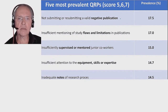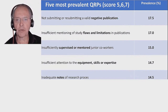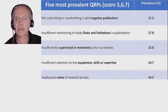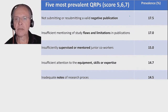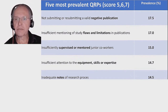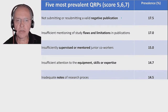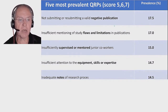We asked our participants about questionable research practices on a seven-point scale. The reference was the last three years, and the scale ranged from one — never — up to seven — always. We lumped together scores of five, six, and seven, so that's the upper end of the scale, let's say frequent. Our respondents admitted to frequent non-submission or resubmission of negative publications, which is, in essence, publication bias.